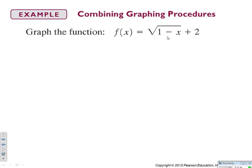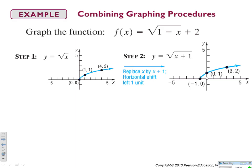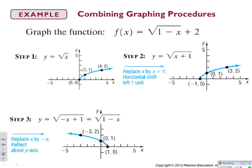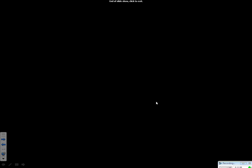Let's do that with the square root function. Starting with the parent function, first add 1 inside to move it left one unit, then replace x with negative x to reflect it, and then add 2 to move it up two units.